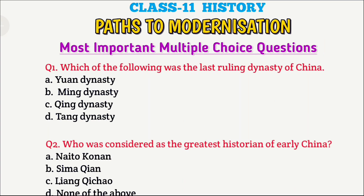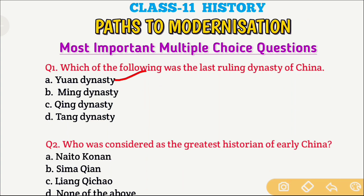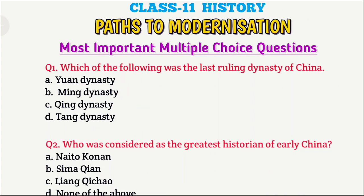So now without further delay, let's start today's video. Question 1: Which of the following was the last ruling dynasty of China? Option A is Yuan dynasty, Option B is Ming dynasty, Option C is Qing dynasty, and Option D is Tang dynasty. The right answer is Option C, which is the Qing dynasty.